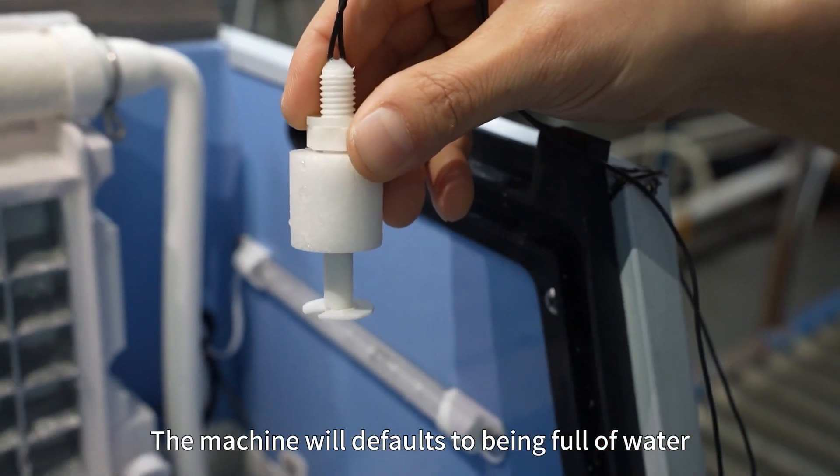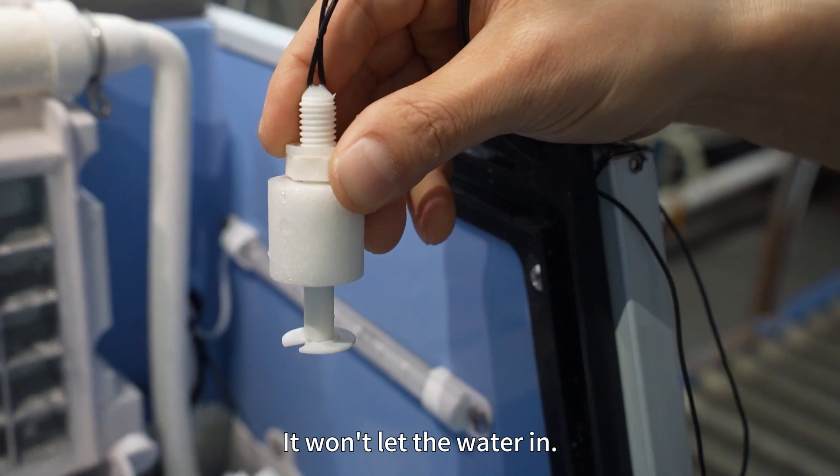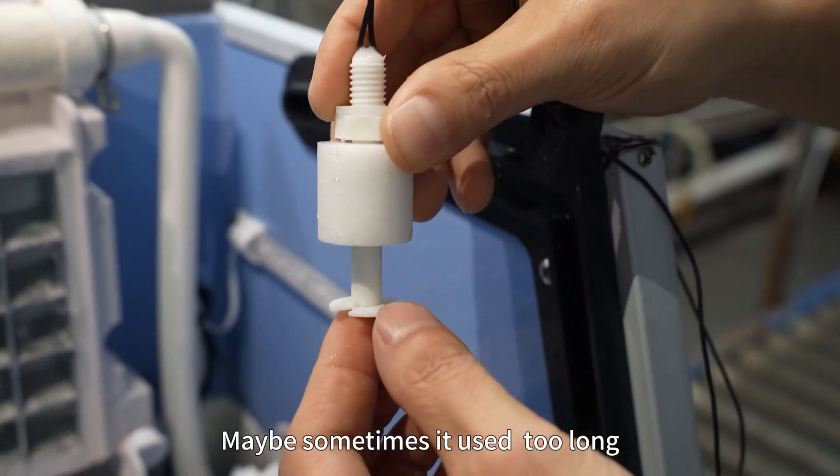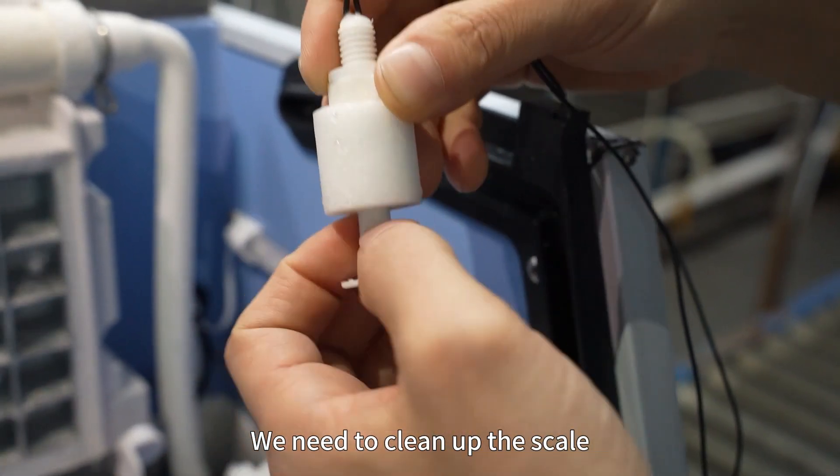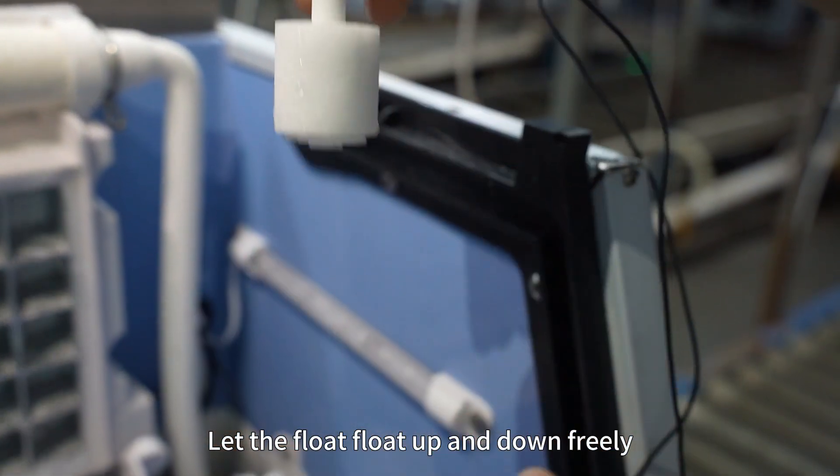Maybe sometimes it's used too long and scale has formed on the floating pole. We need to clean up the scale and let the float move up and down freely.